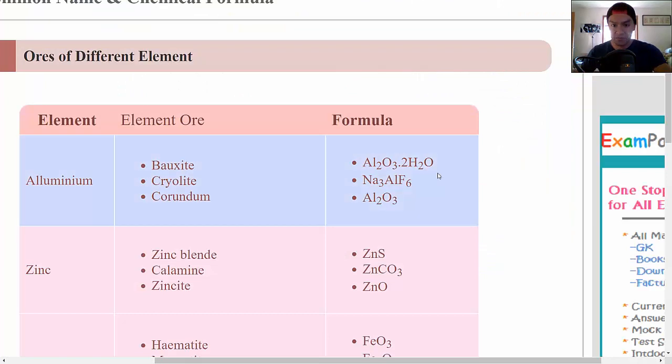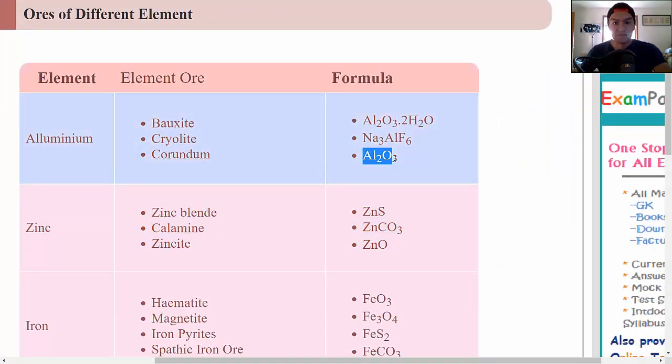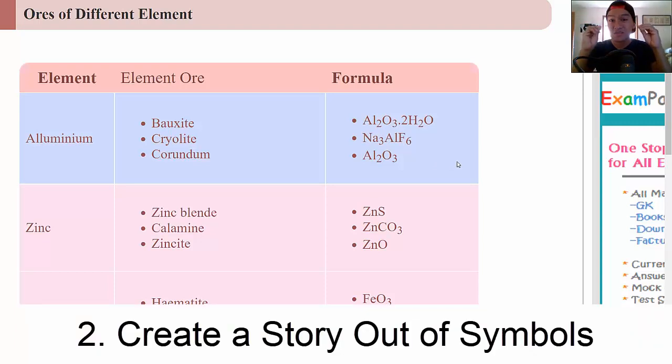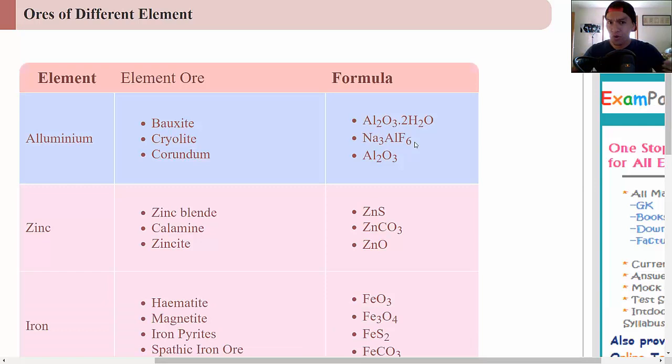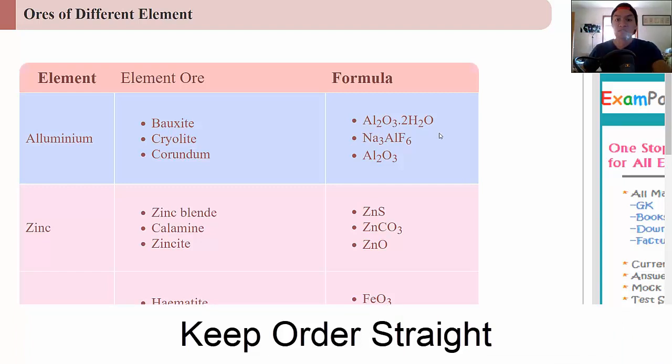So how do you actually memorize the chemical formula? Well, let's say, for example, you have this Al2O3. So you have aluminum and oxygen, two aluminum, three oxygens. So what you would do is you would create a story between these elements. But what you need to do is you need to make sure that you keep the order straight because, for example, if you have Na3F6Al, you have a totally different element or compound, but more importantly, something's completely wrong with the formula because the way the formula is actually written lets you know a lot about how the structure of the molecule actually looks like. So order does matter when it comes to memorizing chemical formulas.